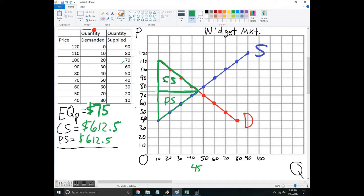We care about this because sometimes the government might step in and change something. Let's say the government says that price of 75 is not fair to poor people and they want to lower the price down to 60. So there's now going to be a price ceiling, the price can't go any higher than 60.